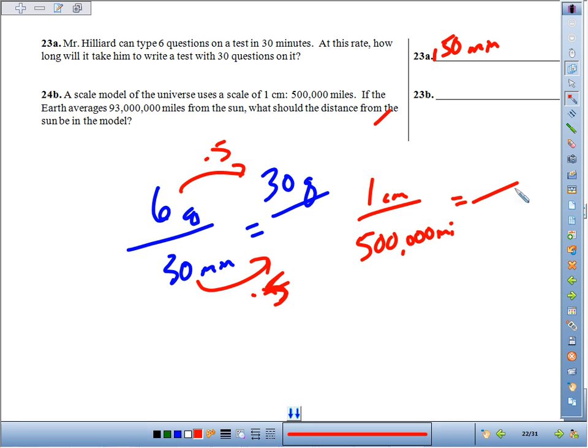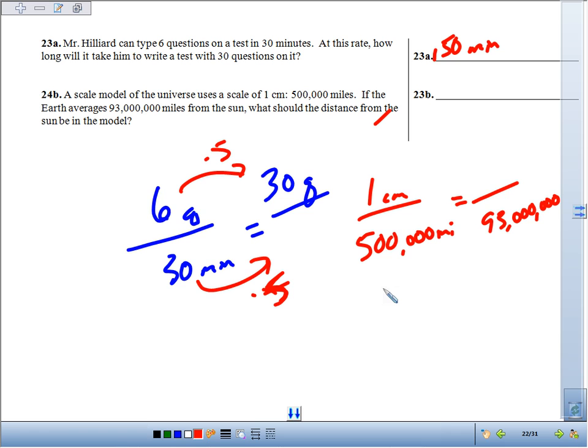Reality is on the bottom, so I've got 93 million times one divided by 500,000. And when I do that, I get 186.